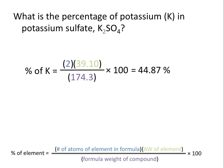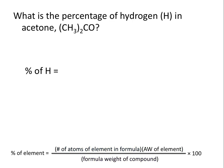So the percentage of potassium in potassium sulfate is 44.87%. Let's look at another example.